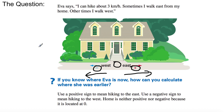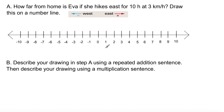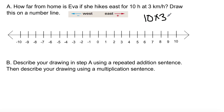How far from home is Eva if she hikes east for 10 hours at 3 kilometers an hour? So, 10 hours times 3 kilometers per hour. Drawing this on the number line, 10 times 3 is going to give you 30, so she's going to walk 30 kilometers. Hopefully she walks 5 hours away and 5 hours back!